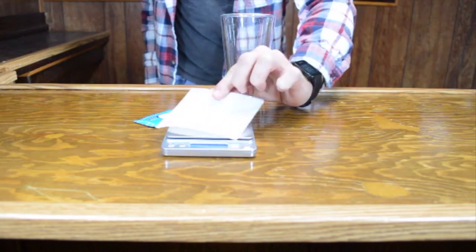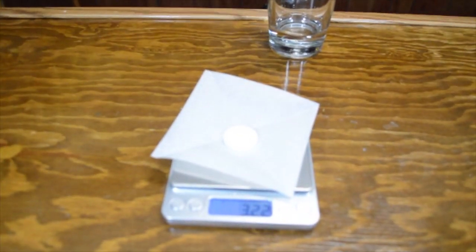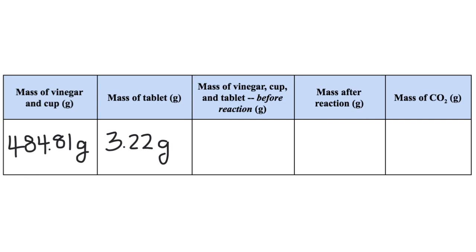Next, place a piece of wax paper on the balance and then zero it. Put the tablet on the paper and record the mass in the data table. Add these two masses together to get the total mass of the system before the reaction.